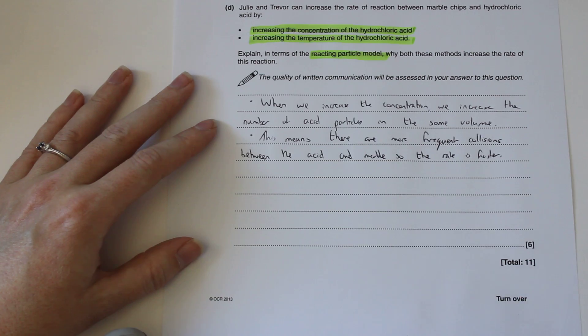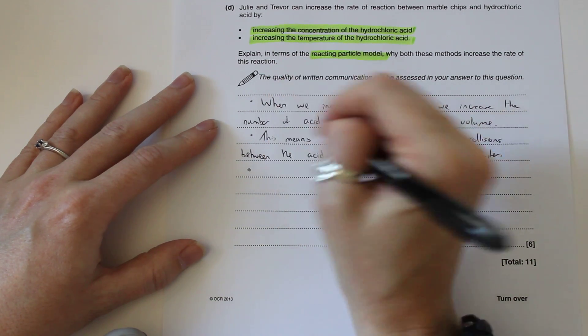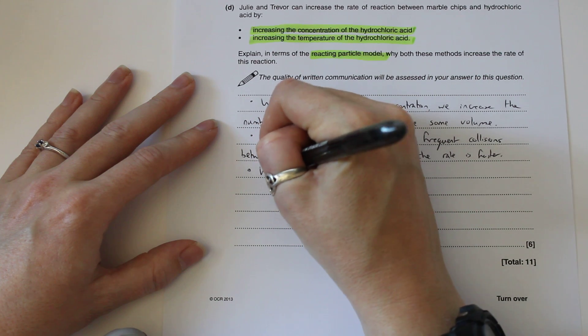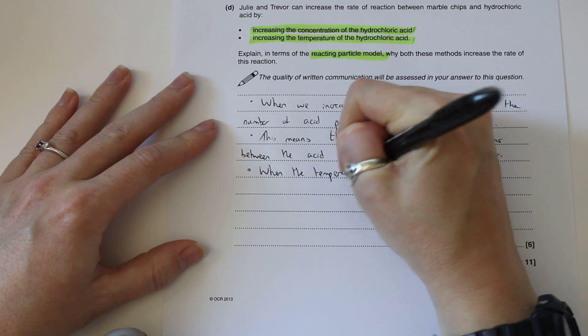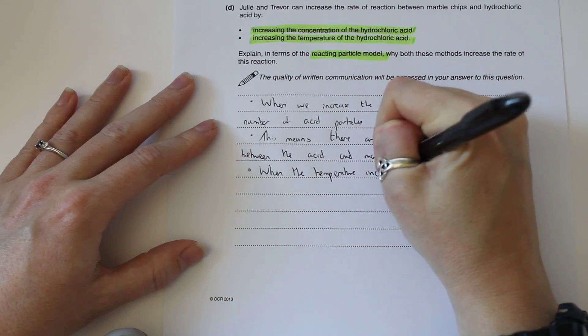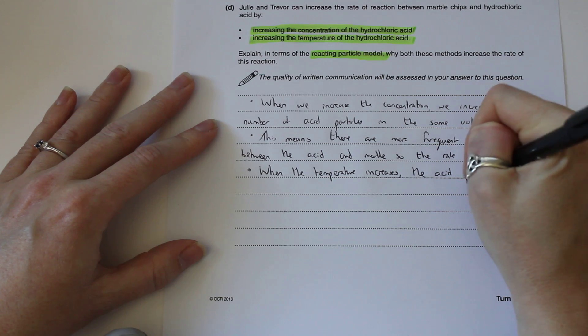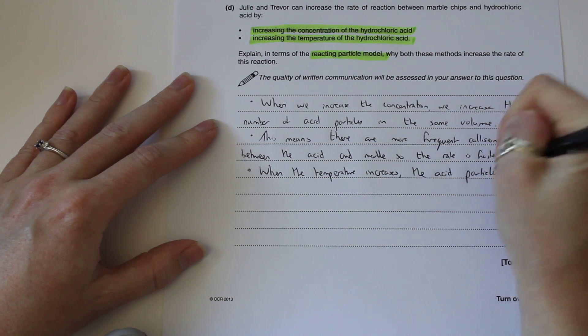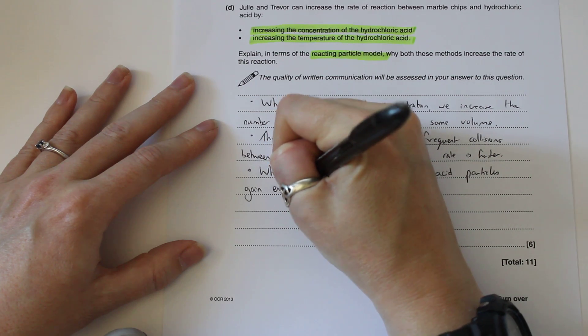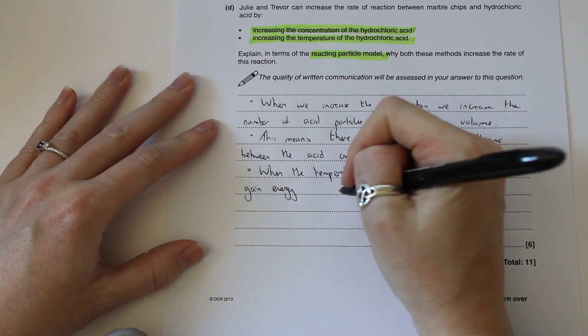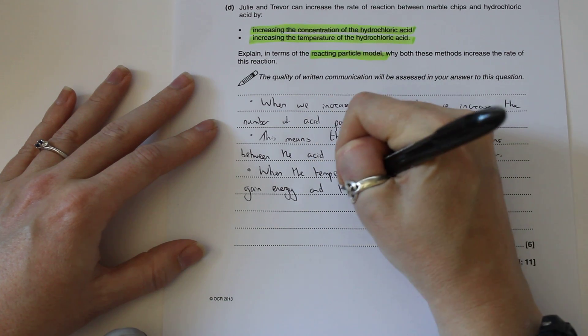That's the first part done. Second bit we've got to look at is increasing the temperature. So when we think about the temperature, we need to talk about what happens when we increase the temperature first of all. So when the temperature increases, the acid particles gain energy. You can just say gain energy or you can say they gain kinetic energy if you want to be really specific. And this means they move faster.